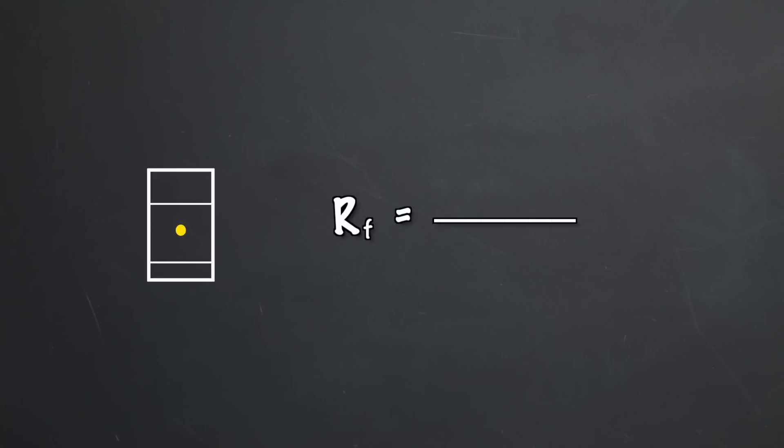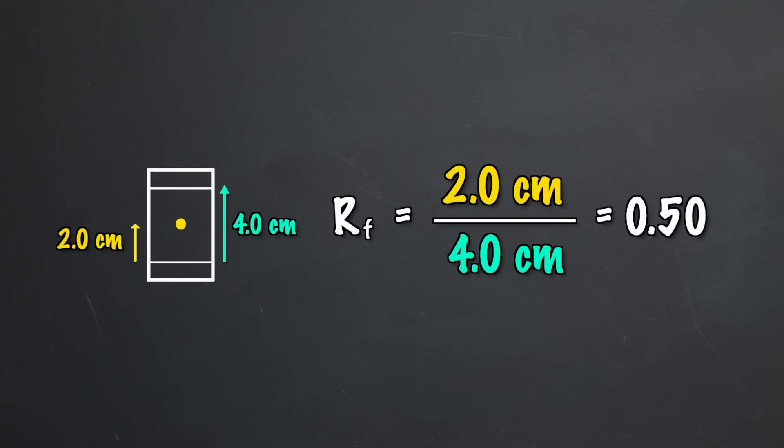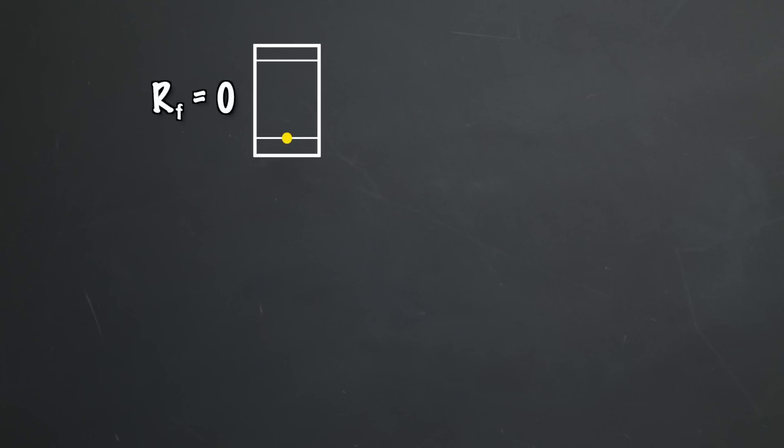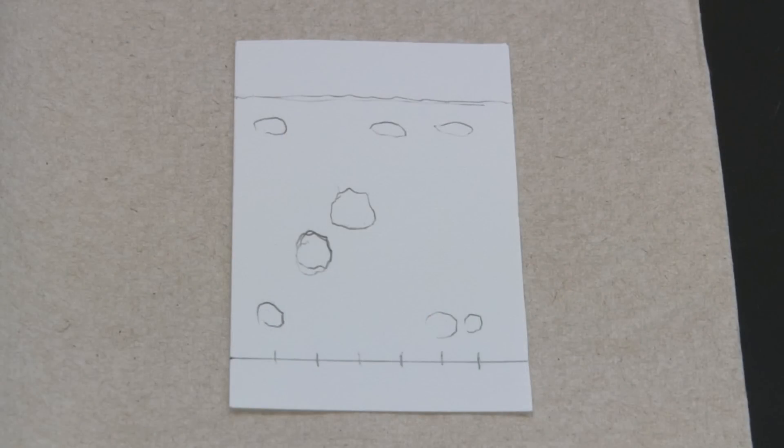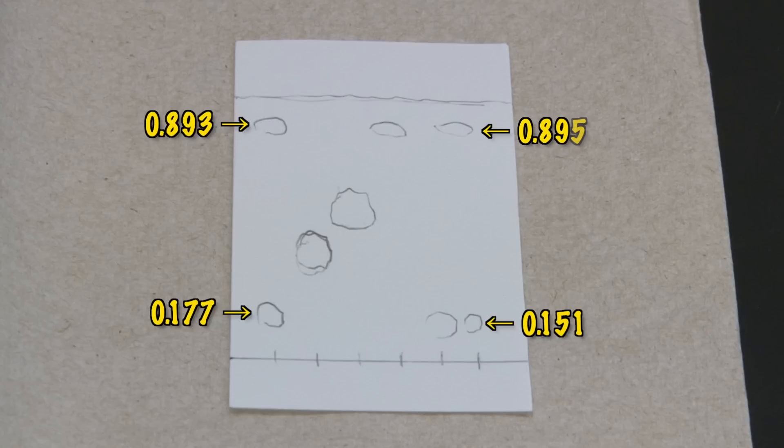The RF is calculated by dividing the distance the spot traveled by the distance the solvent traveled. So, the spot that went halfway up the sheet will have an RF around 0.5. Notice RF has no units because the units cancel when you divide two lengths. The RF will be a value between 0 and 1 and is consistent for a certain compound and a set of experimental conditions. You can use the RF values to verify the identity of the compounds in your unknown sample. The RF values in your unknown should be similar to the RF values of the known compounds you matched them with.